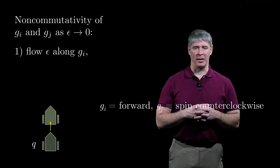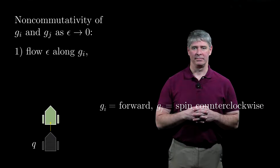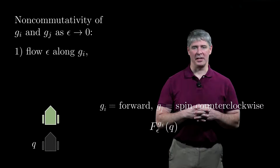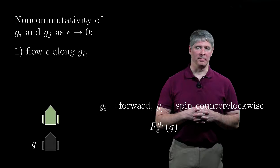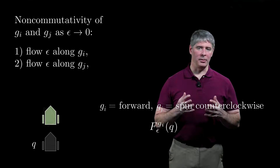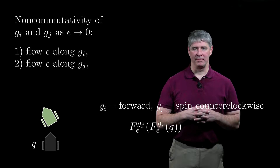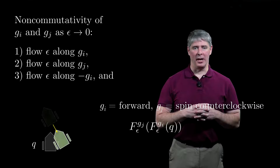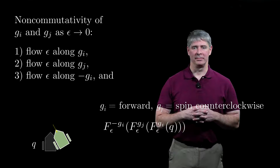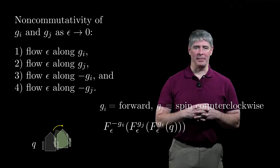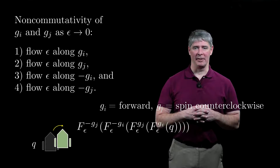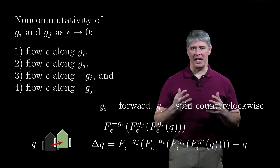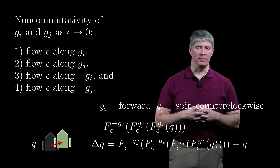First, we flow for time epsilon along g1. The new configuration is f-epsilon-g1. Then we flow for time epsilon along g2, followed by flowing for time epsilon along minus g1. And finally, we flow for time epsilon along minus g2. The net change in configuration is delta-q. To calculate delta-q for small epsilon, we can use a Taylor expansion.